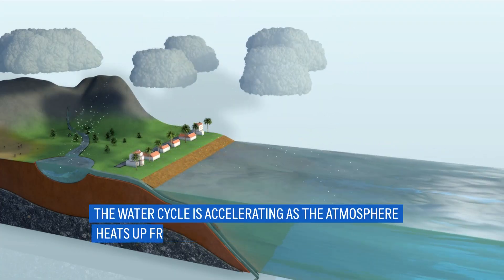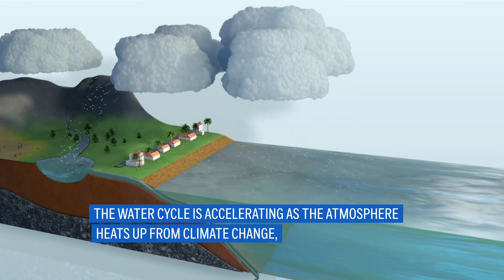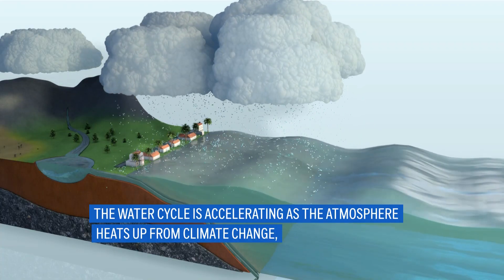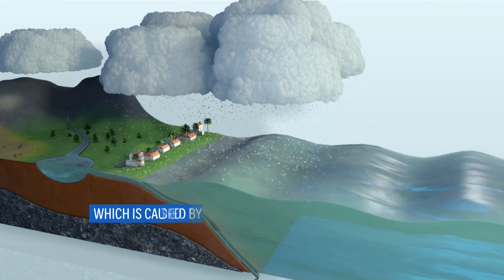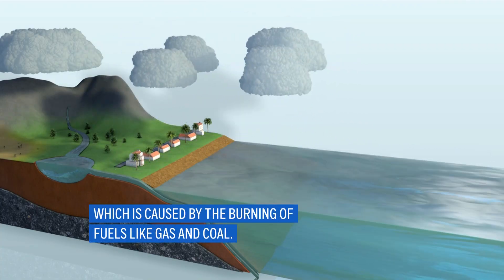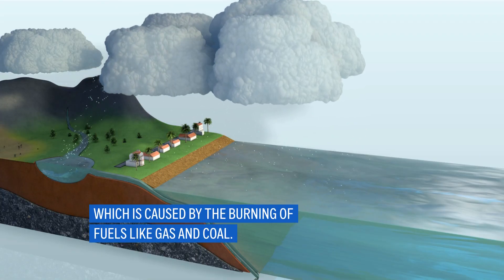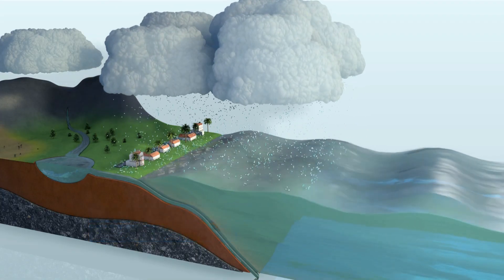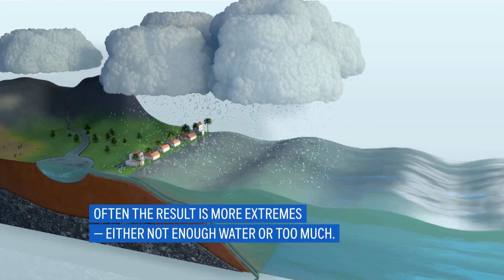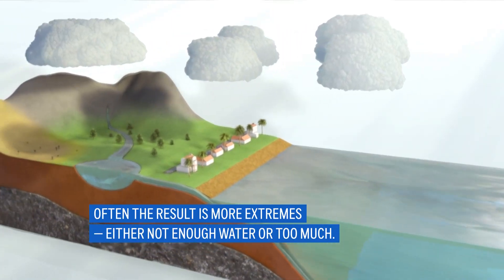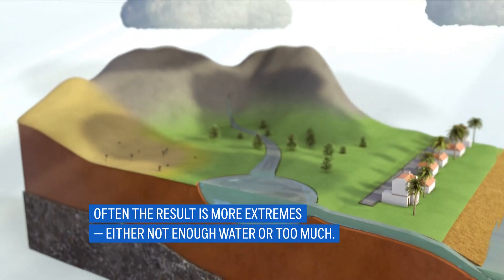The water cycle is accelerating as the atmosphere heats up from climate change, which is caused by the burning of fuels like gas and coal. Often the result is more extremes — either too much water or not enough.